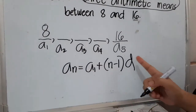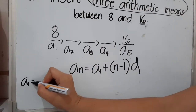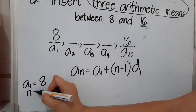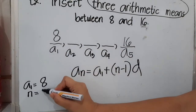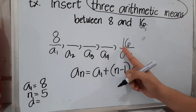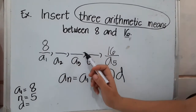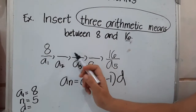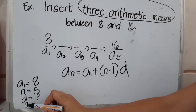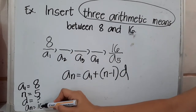Identify all the given — that's our first step as always. Our first term is 8. Our n is 5, since we have five terms. For common difference, we don't have two succeeding terms so d is unknown. Our last term is 16.